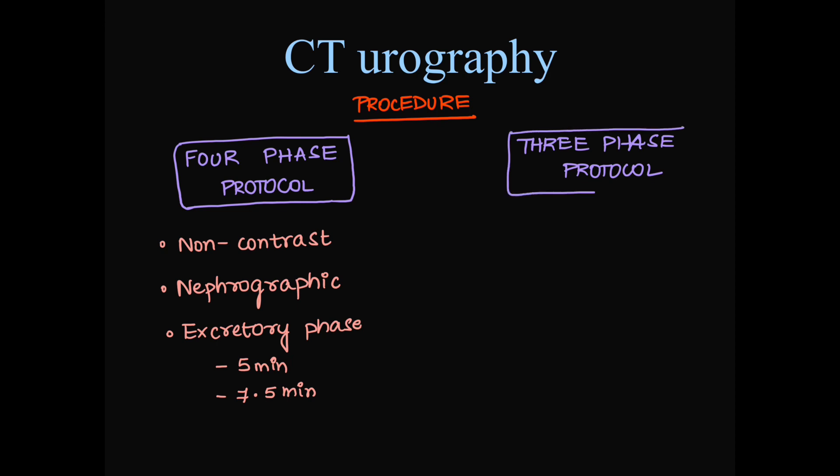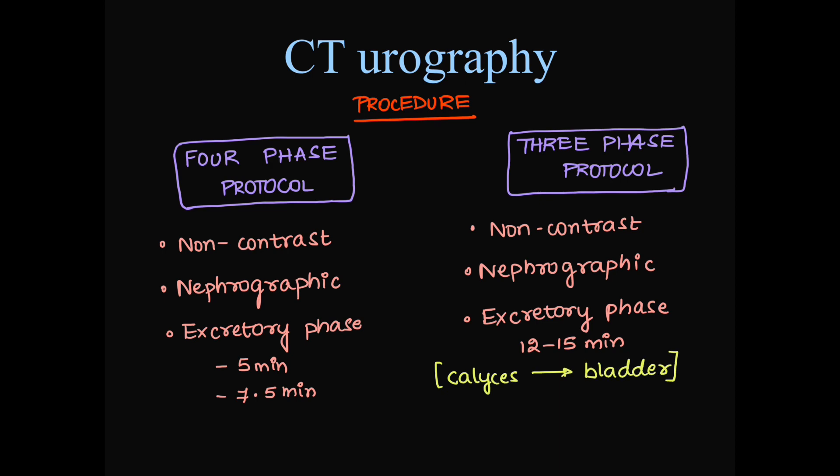Next, in three-phase protocol, we have standard non-contrast sequence. Then, a nephrographic phase and then one delayed phase or excretory phase is taken at 12 to 15 minutes. At this stage, contrast can be seen from calyces up to the bladder since it would have reached the bladder at 12 to 15 minutes.